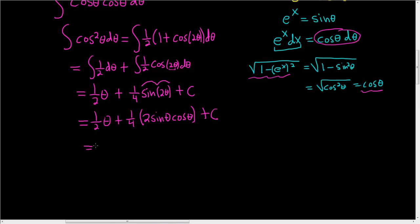So this is equal to 1 half theta. The two cancels with a 4, so we end up with plus 1 half sine theta, cosine theta, plus c. All right, we're almost there.